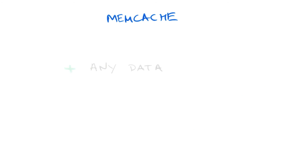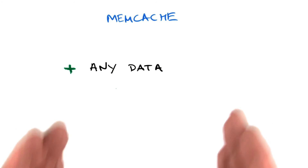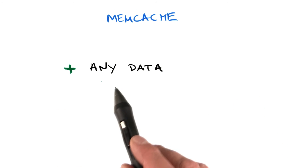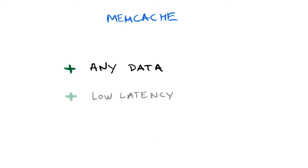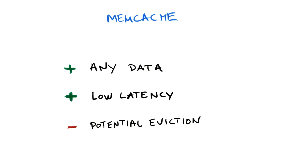Let's look at a summary of memcache. Memcache is not limited to caching data store information — you can put any data you want in memcache. Since the data is retrieved directly from memory, the latency is very low, which helps you build applications that can scale to extreme levels. But since it's a memory cache, the memory could be freed and the data evicted from the cache, so your code cannot rely on it always residing in memcache.